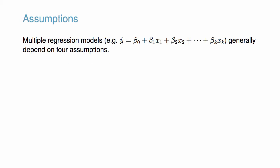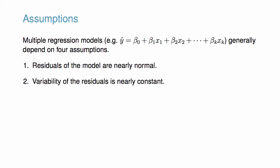Multiple regression models generally depend on four assumptions: the residuals of the model are nearly normal, the variability of the residuals is nearly constant, the residuals are independent, and each variable is linearly related to the outcome.